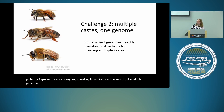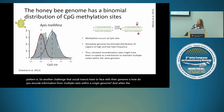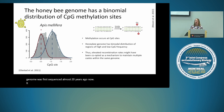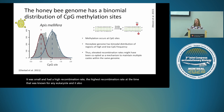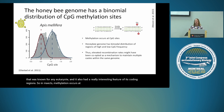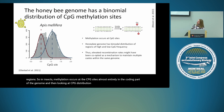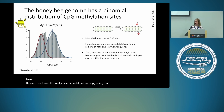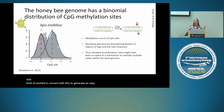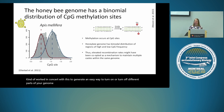Another challenge for social insect genomes is how to encode information for multiple castes within a single genome. When the honey bee genome was first sequenced almost 20 years ago, it was small, had the highest recombination rate known for any eukaryote at the time, and had an interesting feature: in insects, methylation occurs at CpG sites almost entirely in the coding part of the genome. Looking at CpG distribution in coding regions for honey bees, researchers found a really nice bimodal pattern, suggesting recombination rate worked in concert with this to generate an easy way to turn on or turn off different parts of the genome, generating different castes.